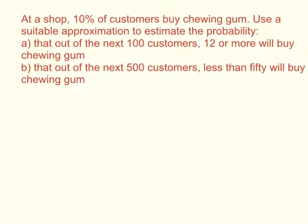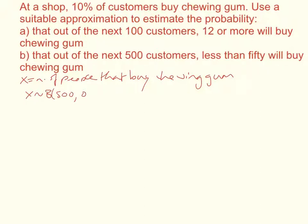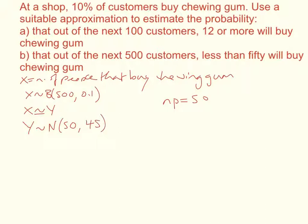Now let's look at part (b). We again define our random variable: X is the number of people that buy chewing gum, and X has a binomial distribution with n equal to 500 and probability 0.1. Now n times p gives us 50, which is greater than 10, so we use the normal approximation. We say X is approximately Y, where Y has a normal distribution with mean 50 and variance 45 — calculated as np times (1 minus p).